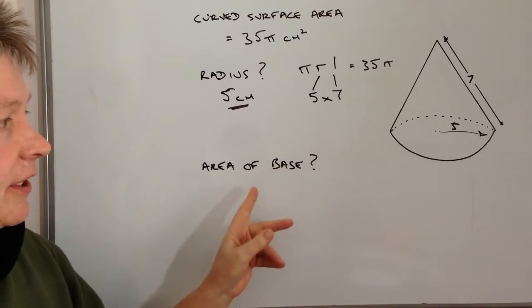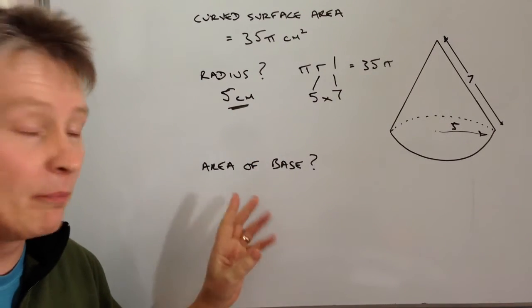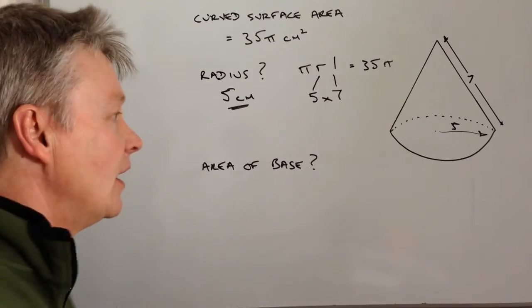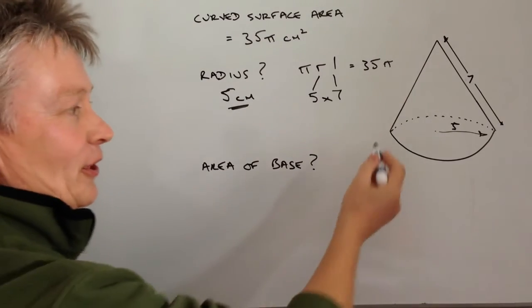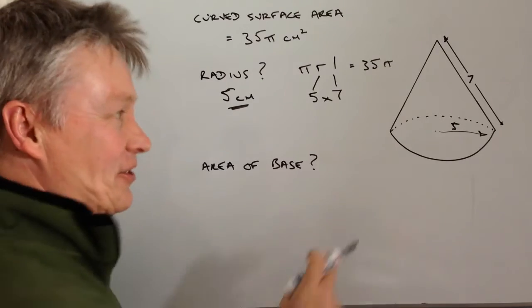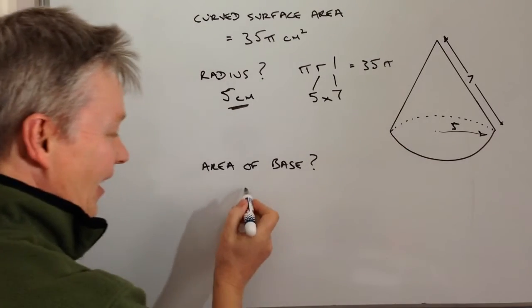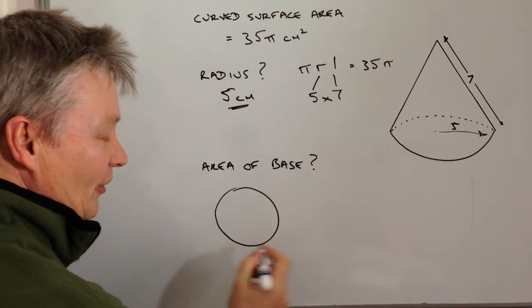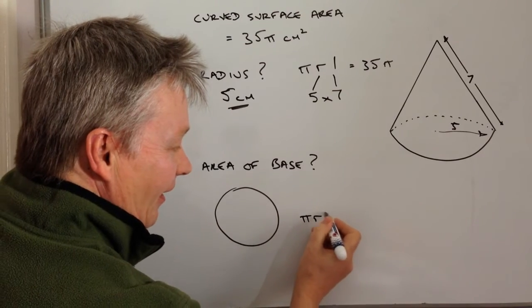So the next bit is to use that radius to work out the area of the base of this particular cone shape. Now I've not drawn it particularly well, but it is a circle at the bottom here, so the area of a circle is going to be πr².